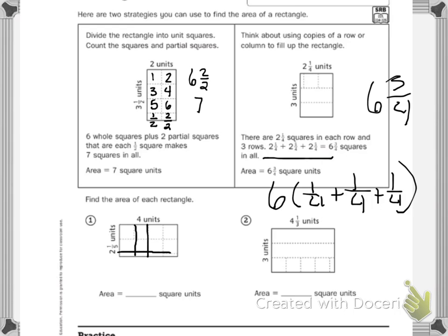So I know I have one, so if I zoom in and change the color on my marker. One, two, three, four, five, six, seven. I have eight whole plus one, two, three, four fifths.